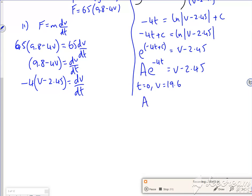So I've got, e to the power 0 is 1, so that goes, is 19.6 minus 2.45, so A has a value of 17.15.